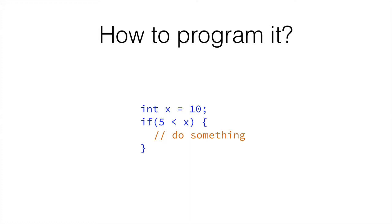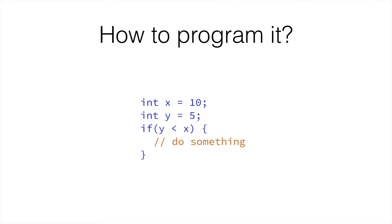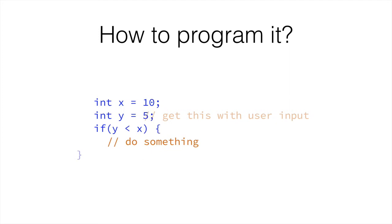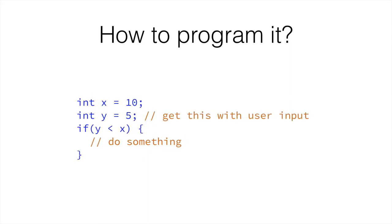In the previous case, 5 is less than 10, so we would run the if statement. Similarly, we can change the 5 for a different variable. We create variable y, give it the value 5, and put it there. The if statement would still run, because 5 is less than 10 — y is less than x. If we were to get the value of y from the user, like we've seen in the previous presentation, we could ask the user to give a value, and then if the value is less than 10, we could do something, and if not, we would not. If the user gave us 11, we wouldn't do anything; if they gave us 9, we would.